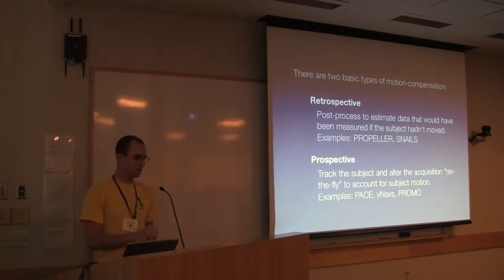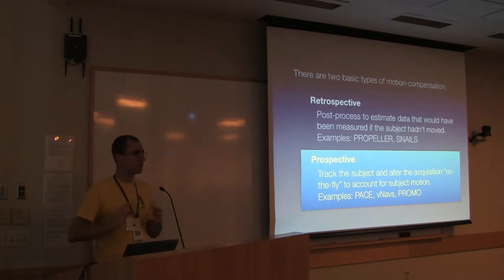The goal with prospective motion correction is that we track the subject and we change the acquisition on the fly to account for the subject motion. Instead of trying to fix bad data, the goal here is to get the right data in the first pass. But in order to do that, we have to modify the sequence dynamically. Some examples are PACE, which is a system for fMRI, VNAVs which is the system we've been developing here, and PROMO which is a similar system on the GE platform. I'm going to talk exclusively about prospective methods because that's what I do and I'm excited about.